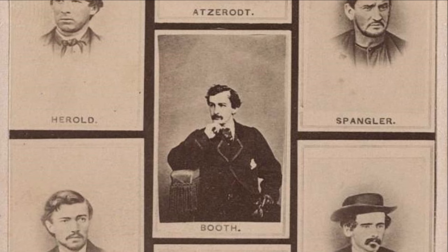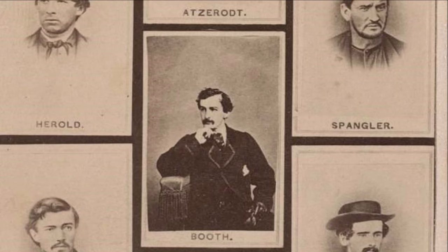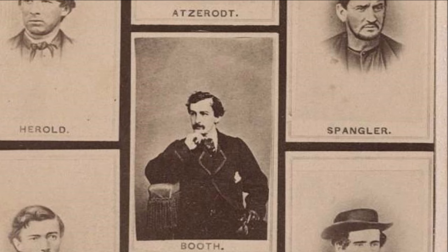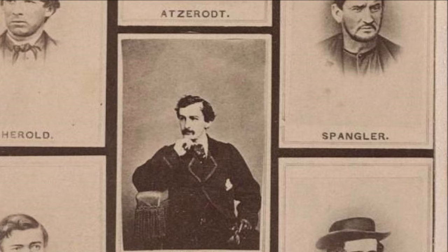Booth was going to assassinate Lincoln and, he hoped, possibly General Grant, while two other assassins would kill the Vice President and Secretary of State. This coup would decapitate the government and might be the only thing to save the Southern cause now that Lee had surrendered.